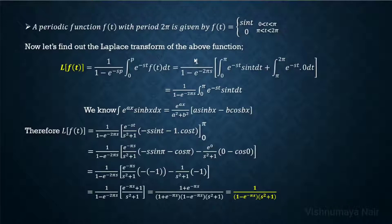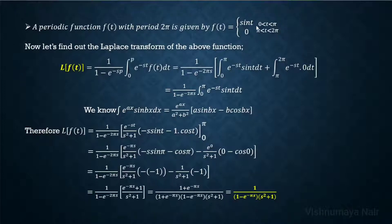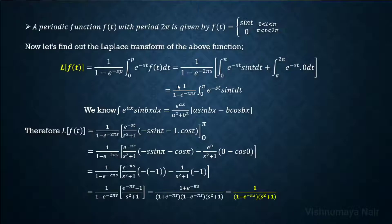The Laplace transform of a periodic function is given by 1 over (1 minus e raised to minus sp) times the integral from 0 to p of e raised to minus st times f of t dt. With p equal to 2π, Laplace of f of t equals 1 over (1 minus e raised to minus 2πs) times the integral split between the limits 0 to π of e raised to minus st times sin t dt, plus the integral from π to 2π of e raised to minus st times 0 dt. The second integral is 0.